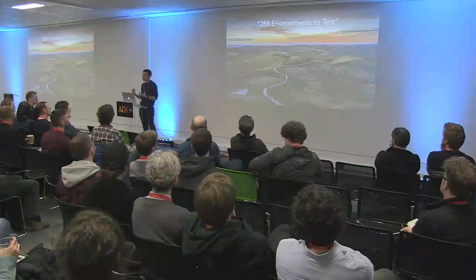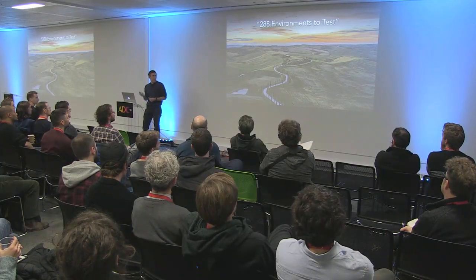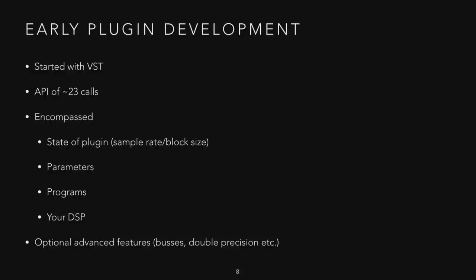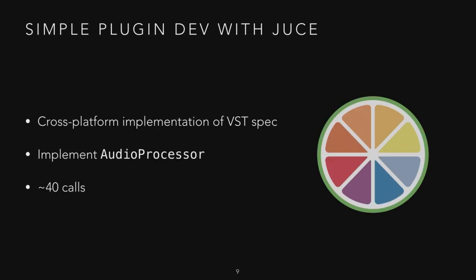That's a huge number of places your code can end up being run — much bigger than a standard desktop piece of software. A brief history: plugin development started essentially with the VST spec, roughly an API of around 23 calls. Some only got called once, and it basically encompassed the state of your plug-in — sample rate, block size, parameters, program list, and your DSP. There were optional advanced features like buses and double precision but you could largely ignore those. Then JUCE came along to unify all those formats, creating cross-platform plugins — essentially a lowest-common-denominator implementation based primarily on the VST spec.